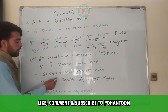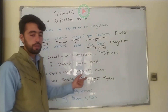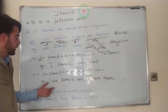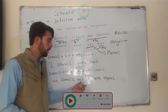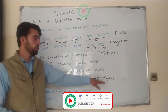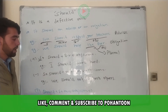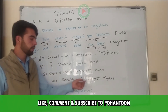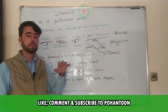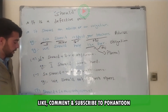The negative structure is: Subject + should + not + base form of verb + object or complement + full stop. For example: 'I should not disturb others.' We should not disturb others.